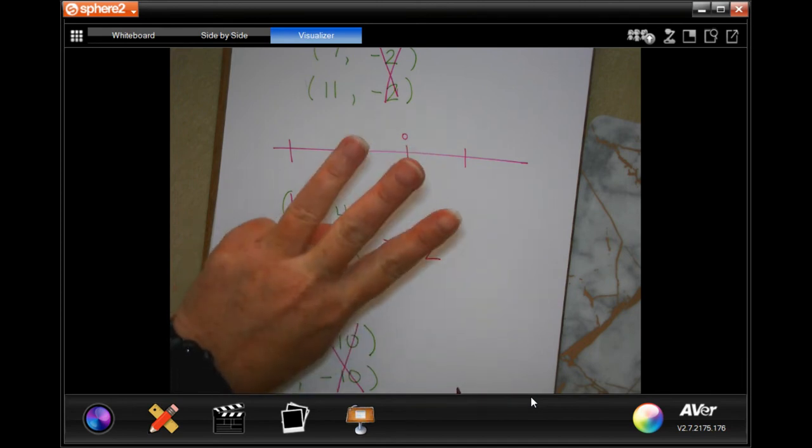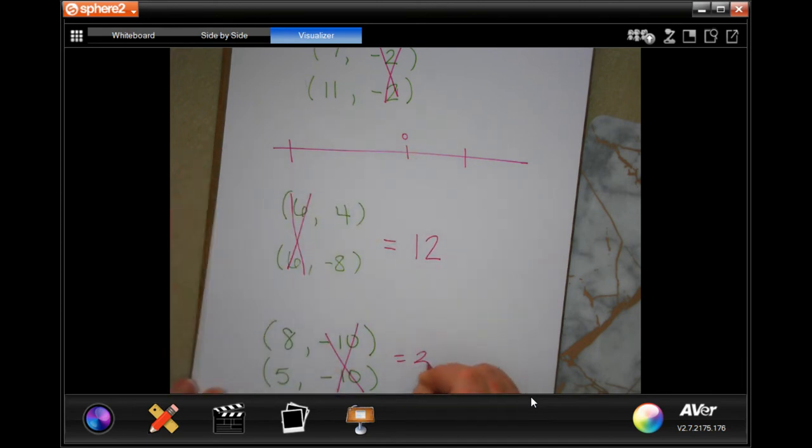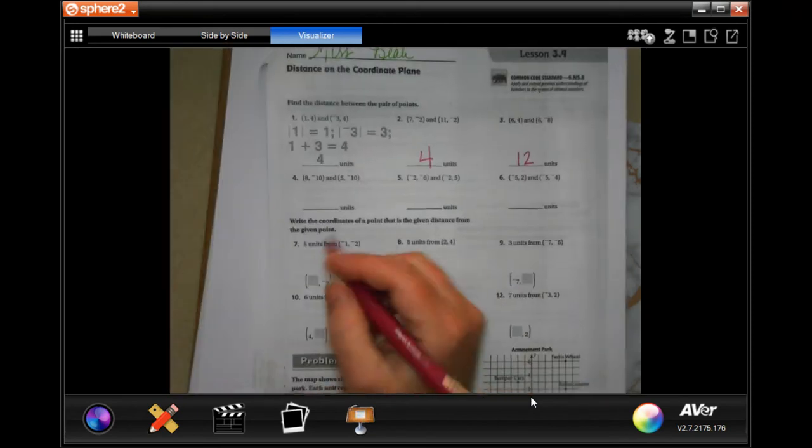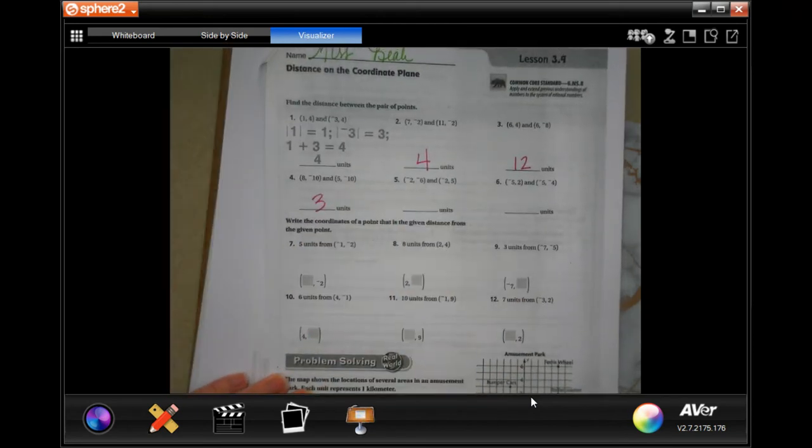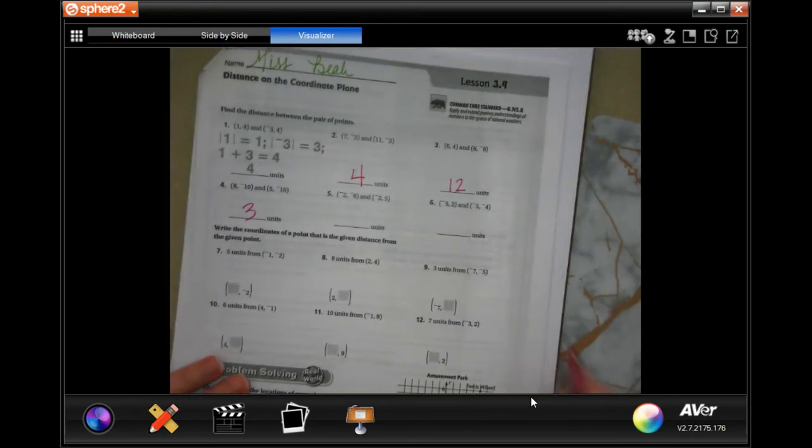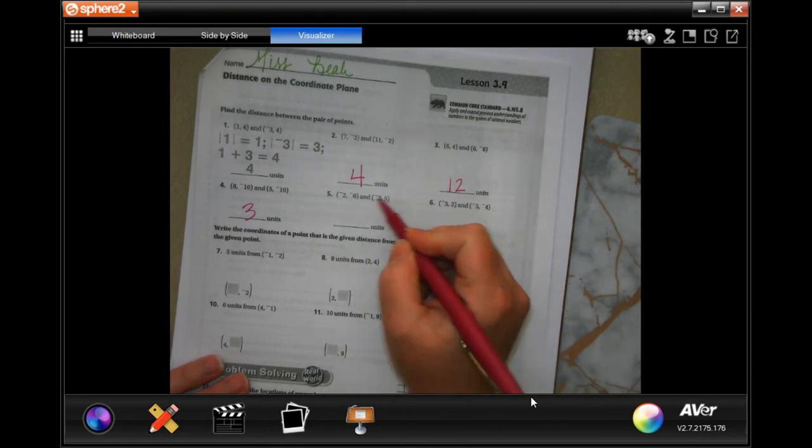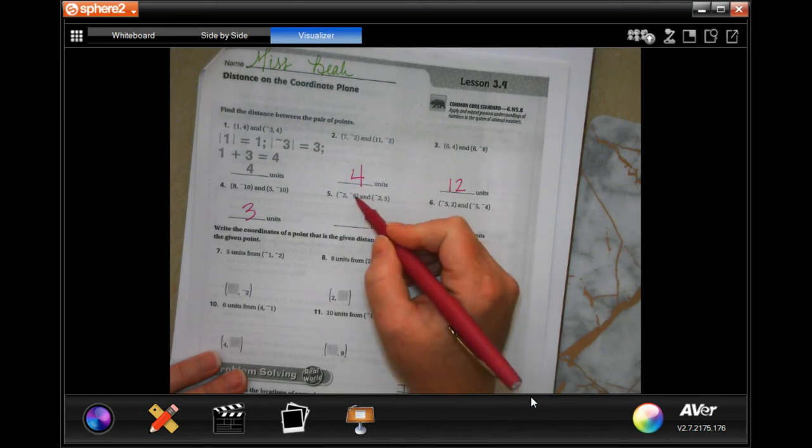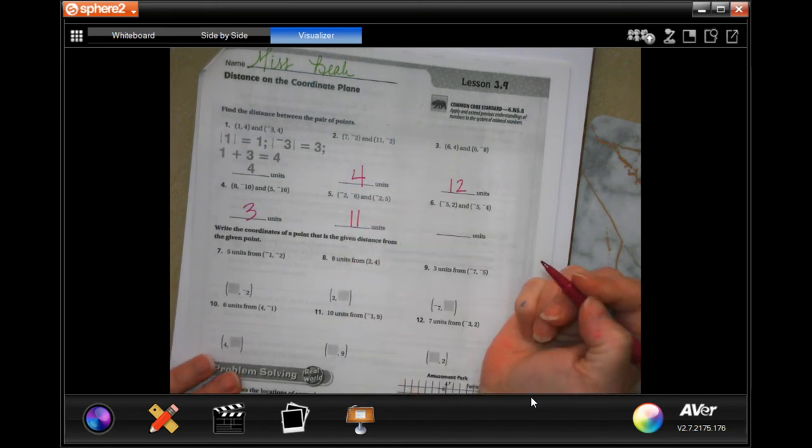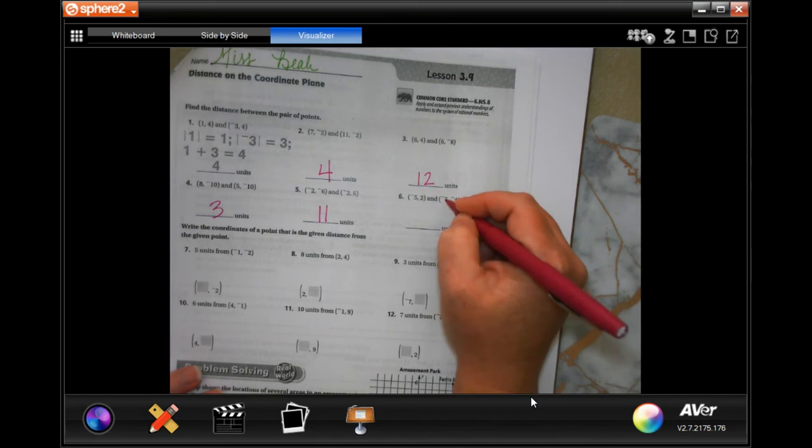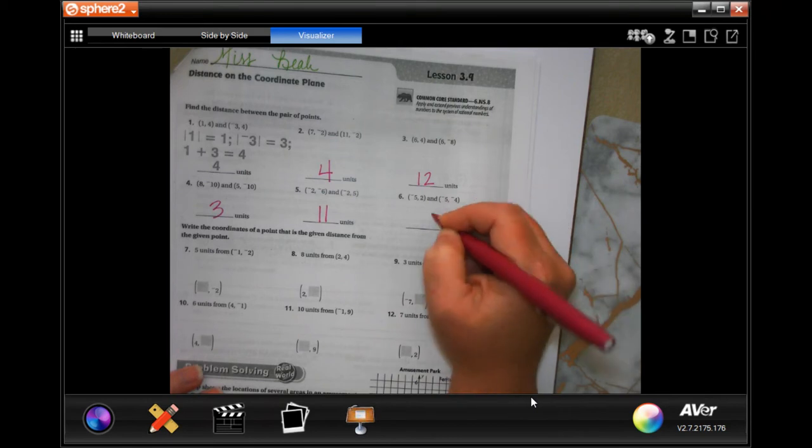Now here you have a positive and a negative, you're going to add them. Negative six and five, so six and five is eleven. On number six, the negative fives are the same. You have positive two and negative four, so you have a positive and negative, add them. Two and four is six, done.